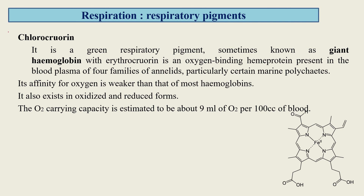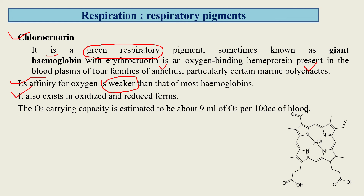The third respiratory pigment is chlorocruorin, a green respiratory pigment sometimes known as erythrocruorin — an oxygen-binding heme protein present in the blood plasma of four families of annelids, particularly certain marine polychaetes. Its affinity for oxygen is weaker than most hemoglobins. It exists in oxidized and reduced forms: when combined with oxygen it becomes oxidized, and when oxygen is released it becomes reduced. The O2 carrying capacity is estimated at about 9 ml of O2 per 100 cc of blood.